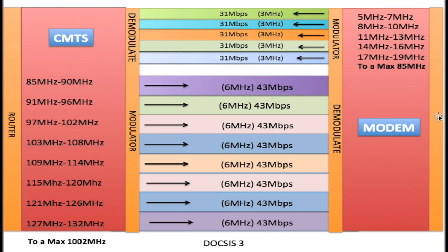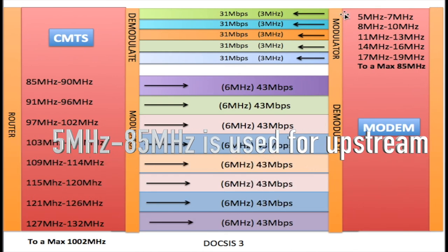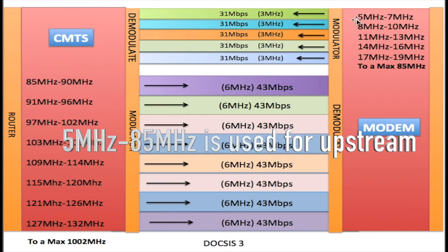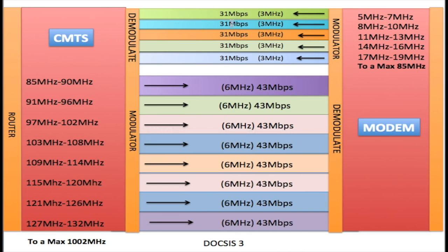Coming back from the modem, there are 3 MHz channels, and the digital data is broken up into 31 Mbps sections modulated into these 3 MHz channels and sent to the CMTS. When this data reaches the CMTS, it is demodulated and sent off to the router, and then out to the internet.